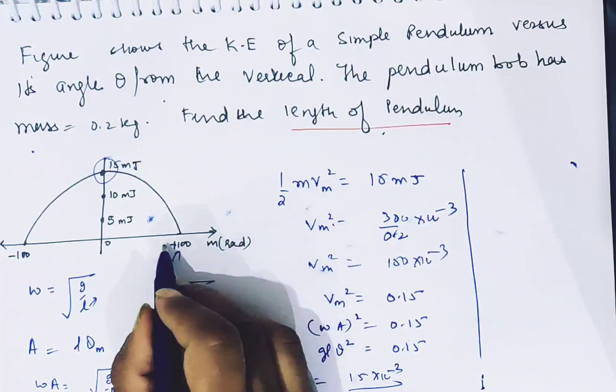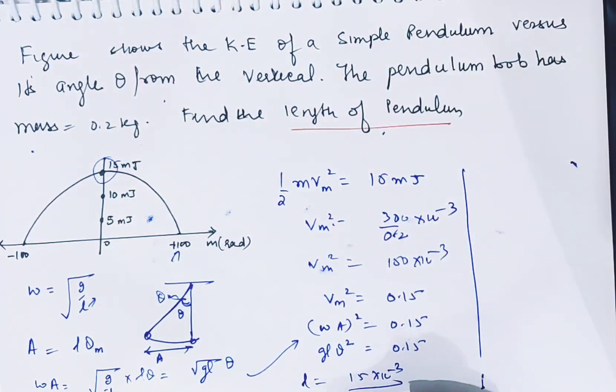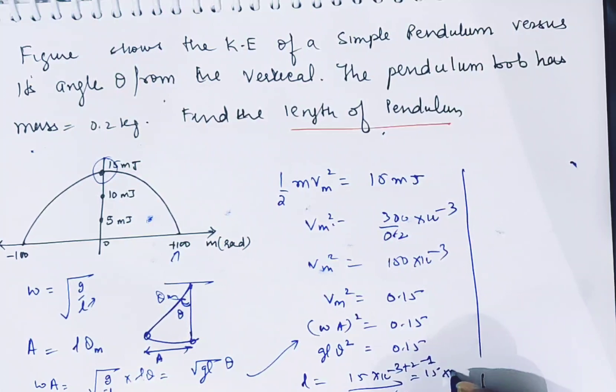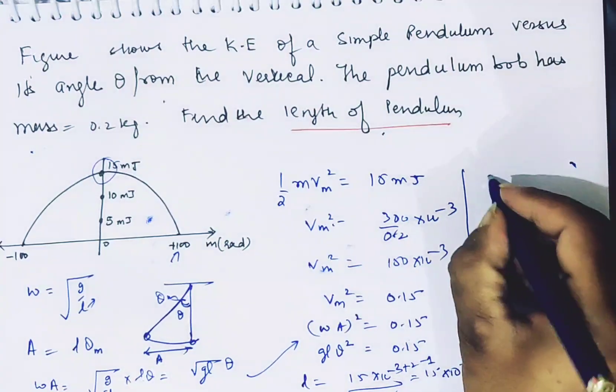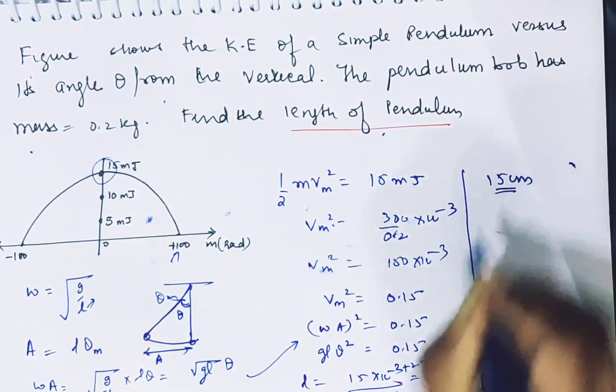We get 0.15. This will be 15 times 10^-4 plus 2 minus 2, that is 0.15 meter. 15 centimeter is the length of the pendulum.